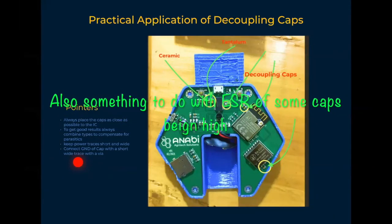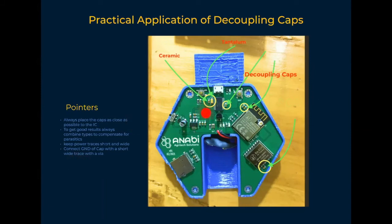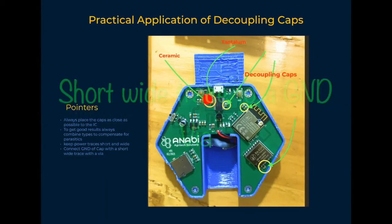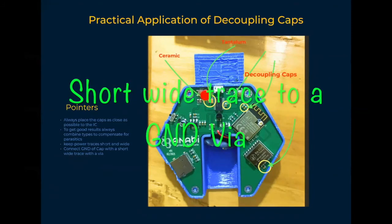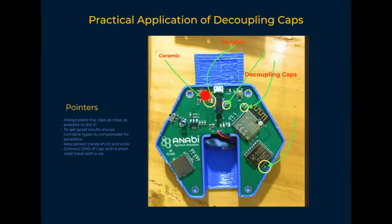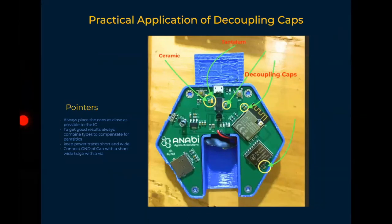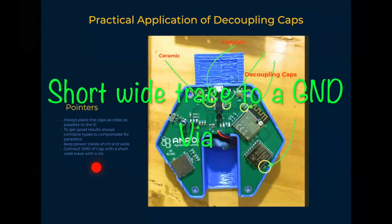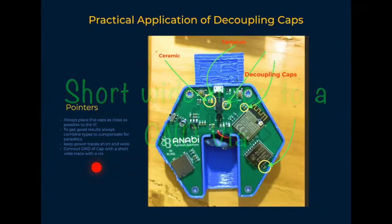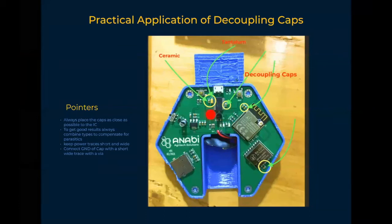Another point: for all these decoupling capacitors, make sure that you keep very short and wide power traces going to power. A decoupling capacitor will always be connected between the power line — say like 5 volts — and ground. When connecting a decoupling cap to your design, on the ground side just use a short thick trace that goes directly to a via. If you zoom in on these images, you will see short, wide traces from each of these capacitors.